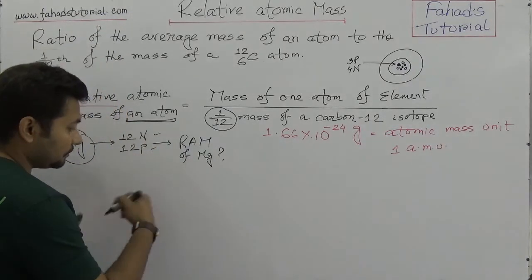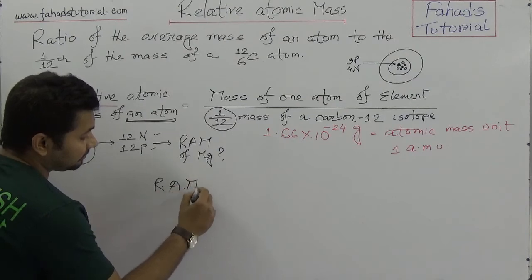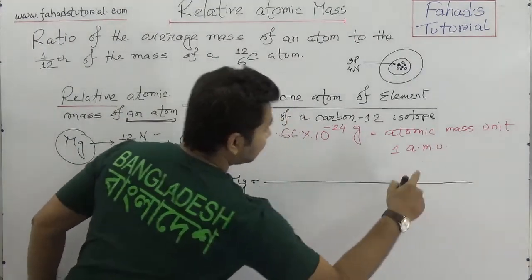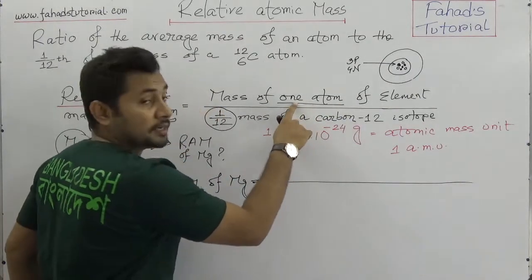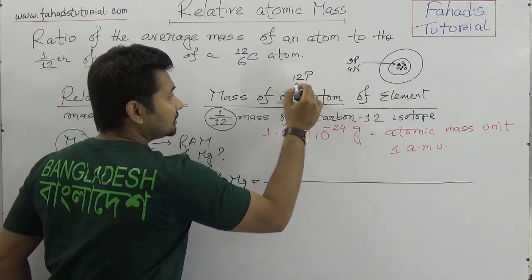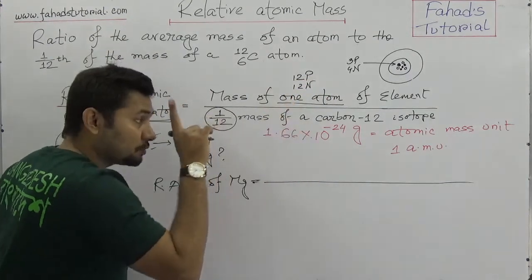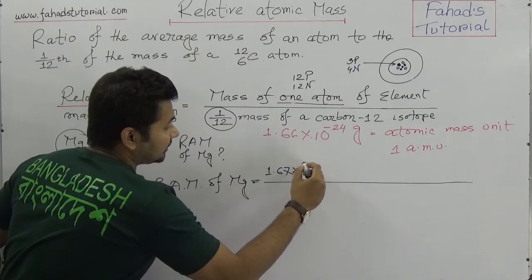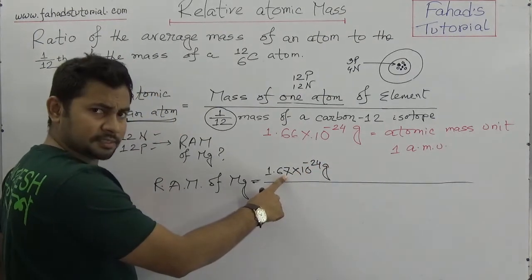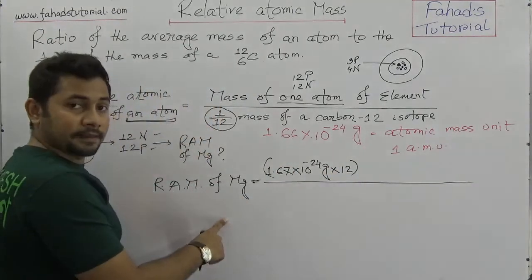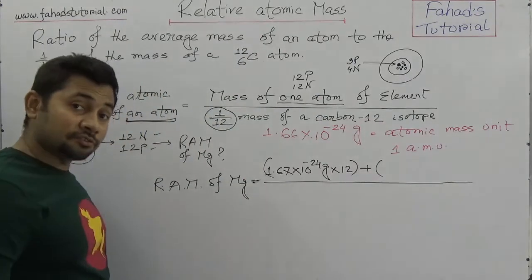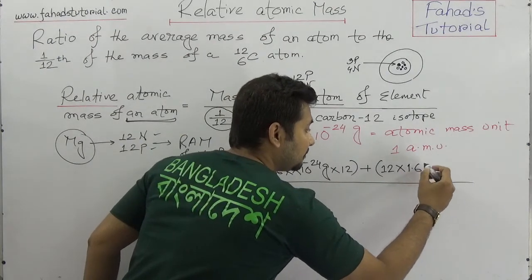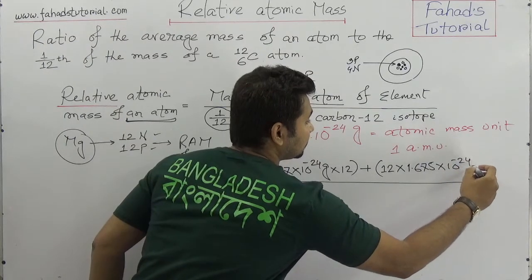We know the mass of a proton, which is 1.67 × 10⁻²⁴ grams. How many protons? Twelve. Plus how many neutrons? Twelve neutrons. We also know the mass of a neutron is 1.675 × 10⁻²⁴ grams. So that is the mass of one magnesium atom — because the mass of one atom is not given directly.